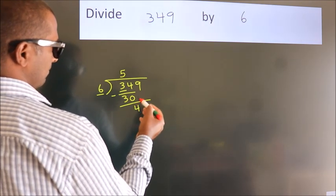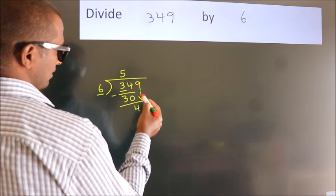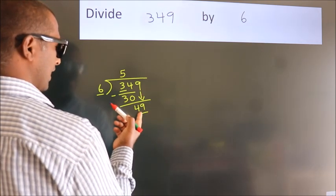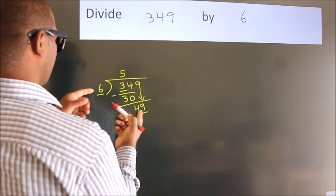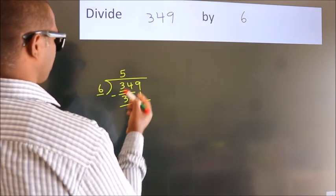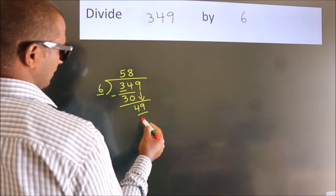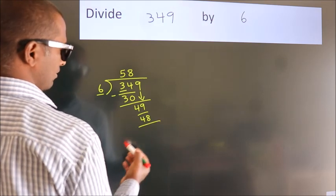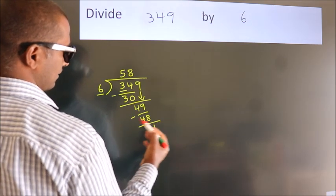After this, bring down the beside number. So 9 down. So 49. A number close to 49 in the 6 table is 6 8s, 48. Now we subtract. We get 1.